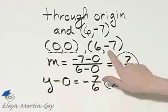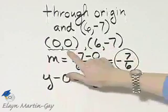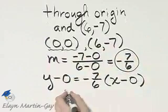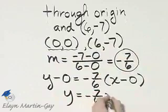Once again, had you chosen this point, you would have been perfectly okay also. So I chose this point. So I have y is equal to negative 7, 6, x.